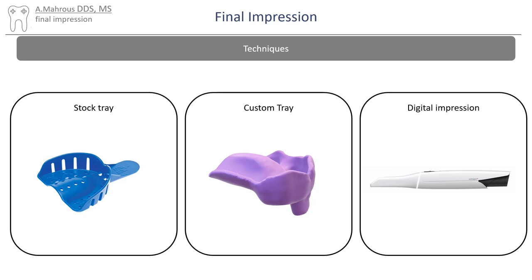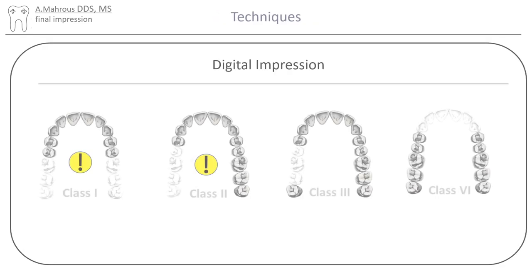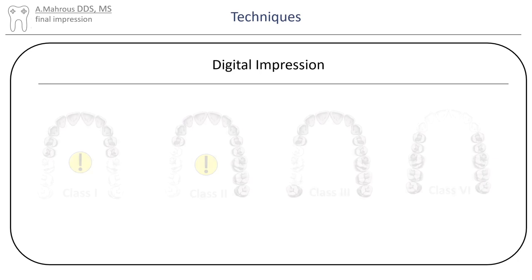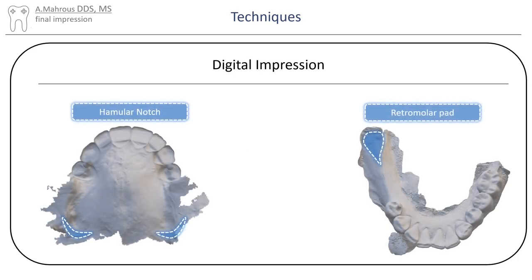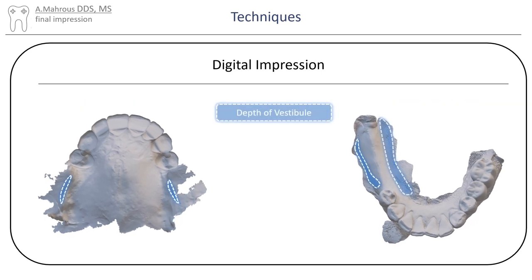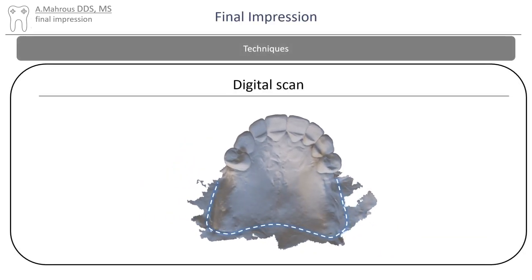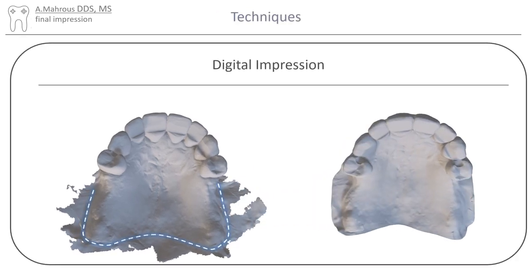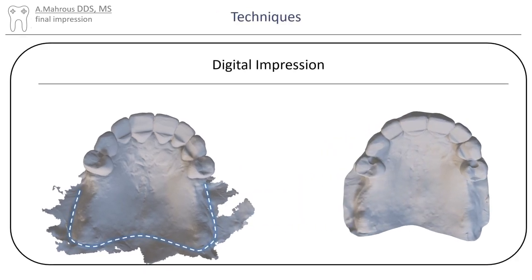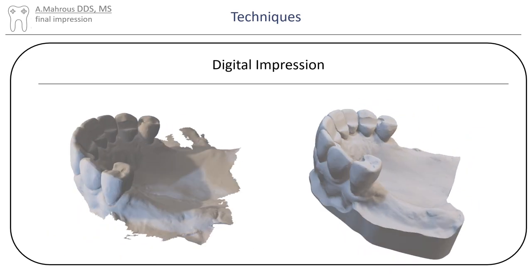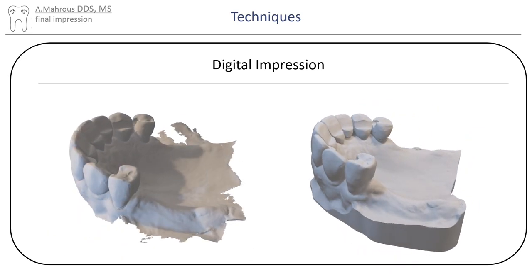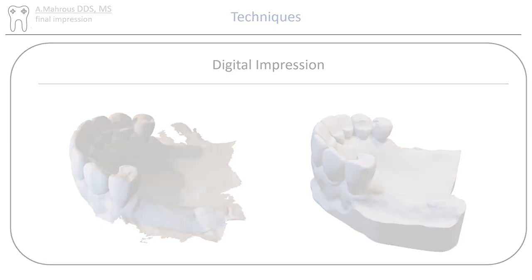Now let's move on to the final technique: digital scanning. Scanners can also be used to make impressions for any Kennedy classification of RPD. However, special consideration has to be made for distal extension cases like class 1 and 2. The main reason for this is the need to extend the impression to soft tissue areas like the hamular notch and retromolar pads. Another concern is the need to capture the depth of the vestibule, and tissues beyond the depth of the vestibule will also need to be captured. This is because when the impression is turned into casts, the deepest portion of the scanned vestibule will be the edge of the cast. Capturing tissue that is this deep can be challenging because of the movable nature of the soft tissue.